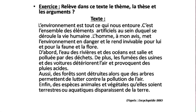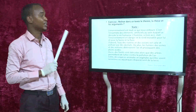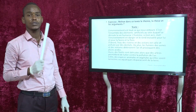« D'abord, l'eau des rivières et des océans est salie et polluée par des déchets. De plus, les fumées des usines et des voitures détériorent l'air et provoquent des pluies acides. Aussi, les forêts sont détruites, alors que des arbres permettent de lutter contre la pollution de l'air. Enfin, des espèces animales et végétales, qu'elles soient terrestres ou aquatiques, disparaissent de la terre. »